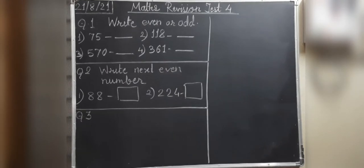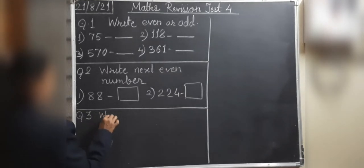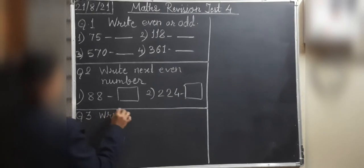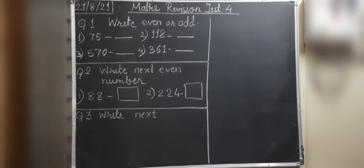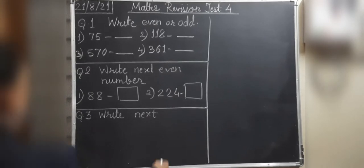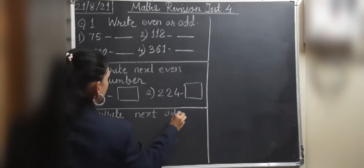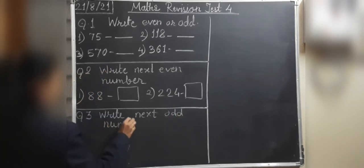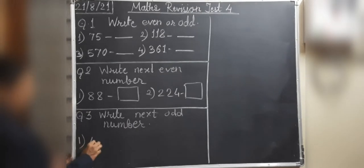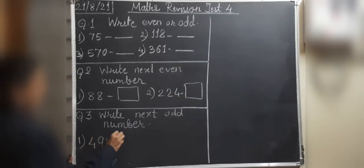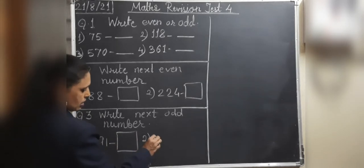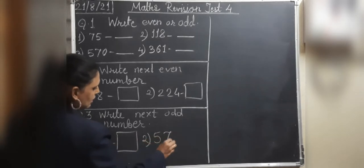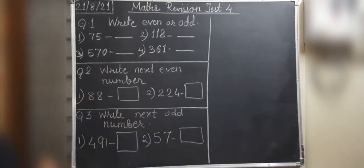Question number 3: Write the next odd number. Number 1 is 491 — write its next odd number. Number 2 is 57 — write its next odd number.